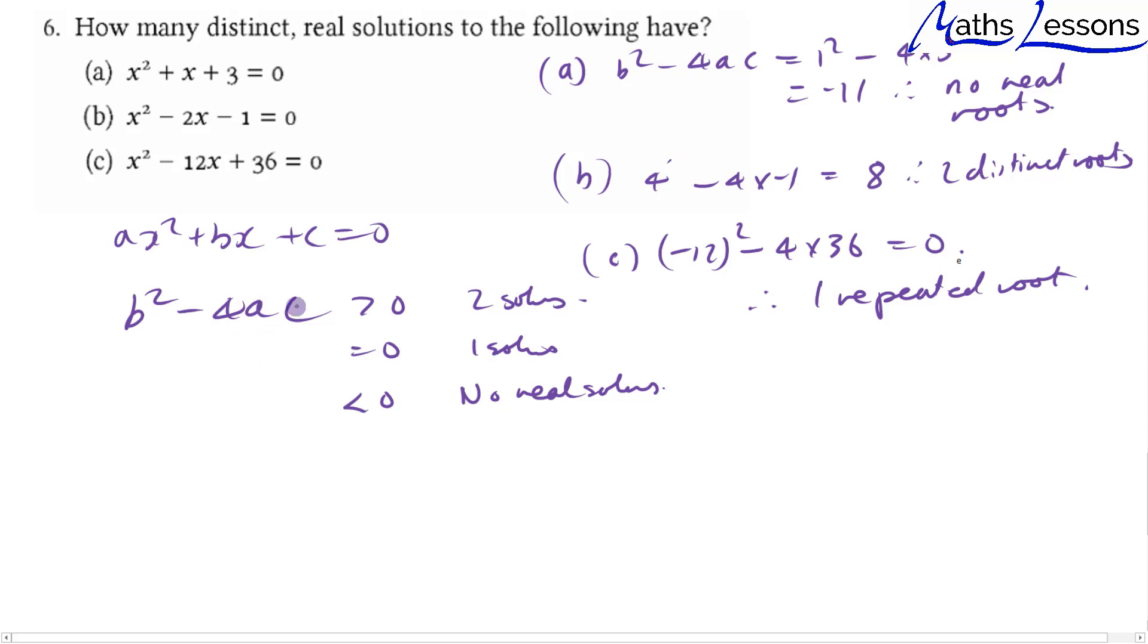So do remember the discriminant has these three properties: 2 solutions, 1 solution, and no real solutions.